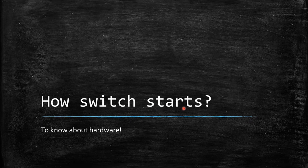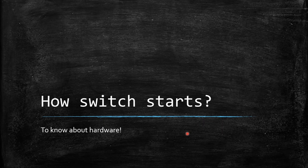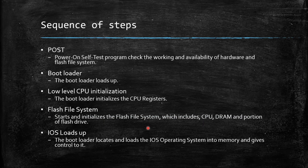To understand how to recover from a system crash, you first need to know how a switch starts — specifically, its booting sequence, which requires knowledge of hardware. I assume you have basic knowledge of hardware: what a CPU is, what RAM is. With that foundation, let's get started. There are five steps in the sequence a switch goes through while booting up.